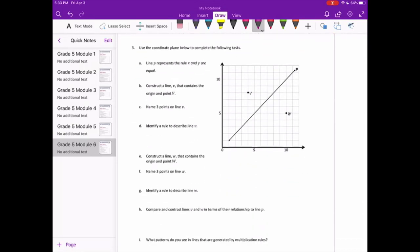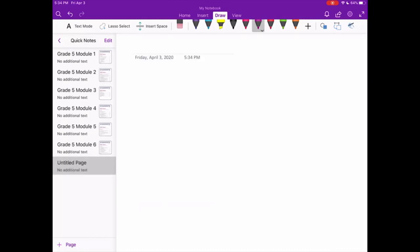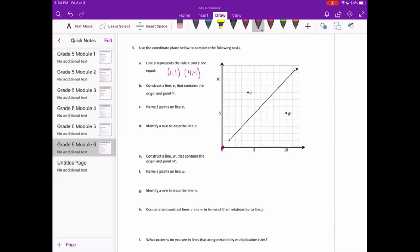Number 3, use the coordinate plane below to complete the following tasks. Line P represents the rule X and Y are equal. So that's saying if X is 1, Y is 1. If X is 4, Y is 4. Construct a line V that contains the origin and point V. So we want line V that contains the origin, which is 0, 0, and point V. Let's connect the origin and point V.